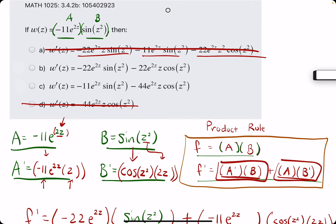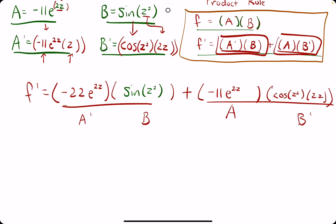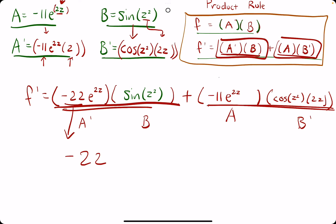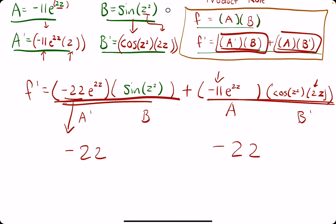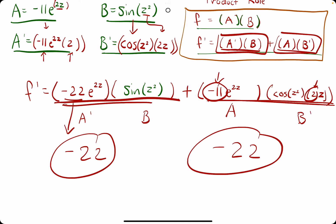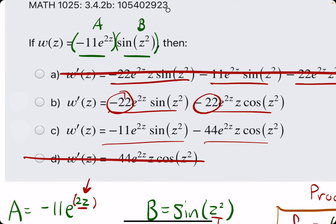We're between these because we have two terms that are either added or subtracted together. A big thing that helps us distinguish between our right and wrong answers are the coefficients. In this big term, the only numbers we have out in front are negative 22. In this big term, we have negative 11 and also, if we look very closely, this 2. When we multiply negative 11 and 2, we get negative 22. So, we're looking for the answer that has two big terms with negative 22. Based on those coefficients, we should be able to identify our answer.